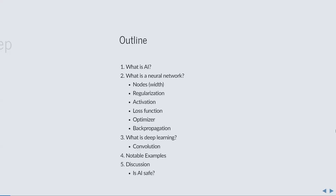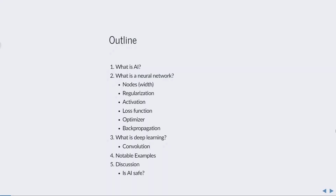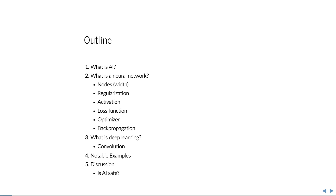In this lecture I'll talk about neural networks, deep learning, and artificial intelligence. The purpose is to be introductory, so first I'll give a brief overview of what artificial intelligence is and where it is implemented. Then I'll explain what a neural network is and how it relates to regression analysis, some properties of neural networks, how to train one, deep learning, convolutional neural networks, notable examples, and whether AI is safe.